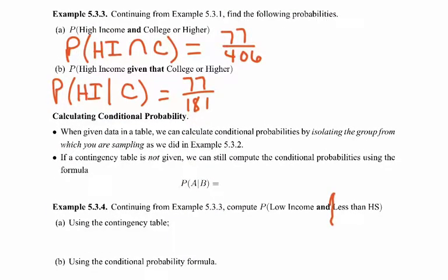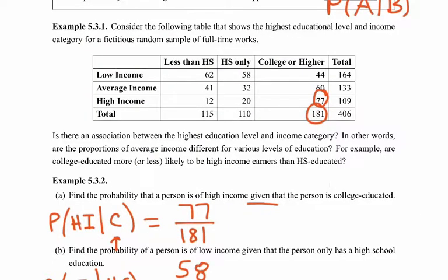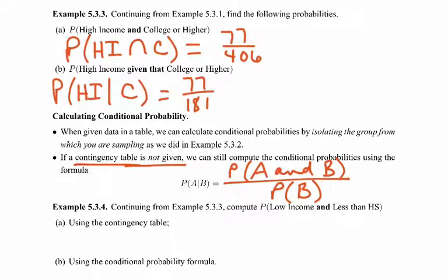Now let's look at calculating conditional probabilities using a formula, for when a contingency table is not provided. The formula is: P(A|B) = P(A and B) / P(B). An important point: only use this formula if the contingency table is not given. If the contingency table is given, just isolate the groups you're interested in directly from the table — that's much faster.